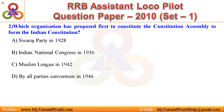Question 2: Which organization first proposed to constitute a Constitution Assembly to form the Indian Constitution? A. Swaraj Party in 1928, B. Indian National Congress in 1936, C. Muslim League in 1942, D. All Parties Convention in 1946. Answer is D.